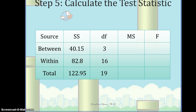You might want to pause and see if you can work out the final three values for this table. Remember that the cell under mean squared for total, the total F, and the F within will all be empty. So there are three more values you need to compute — go ahead and pause and work through that to see if you can find what our F statistic would be.